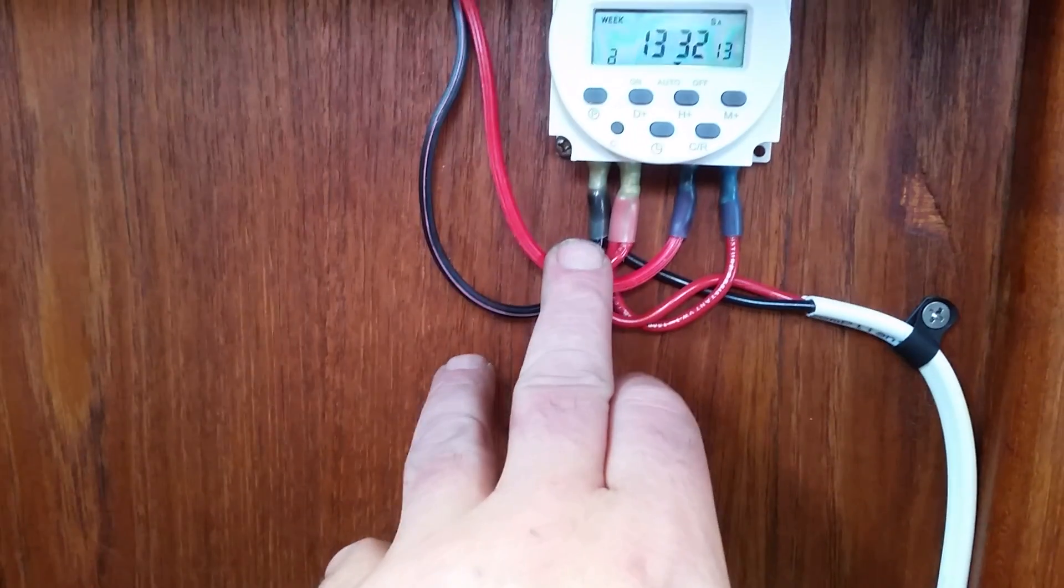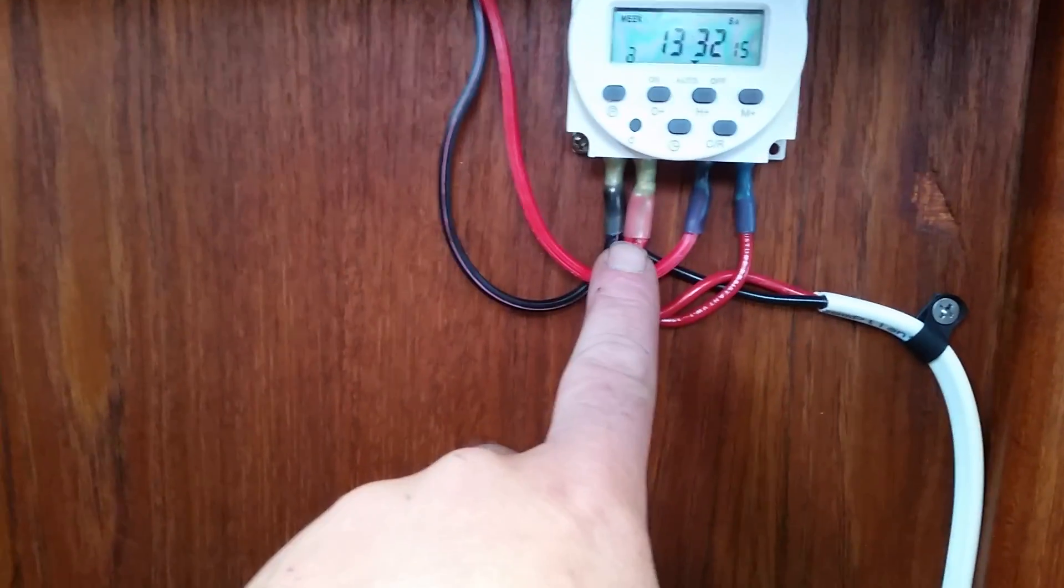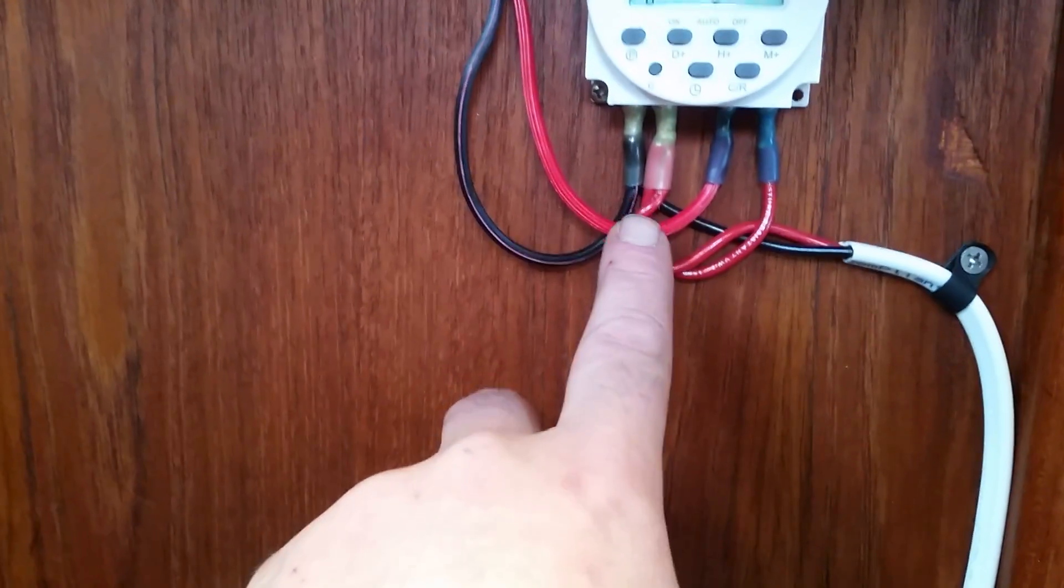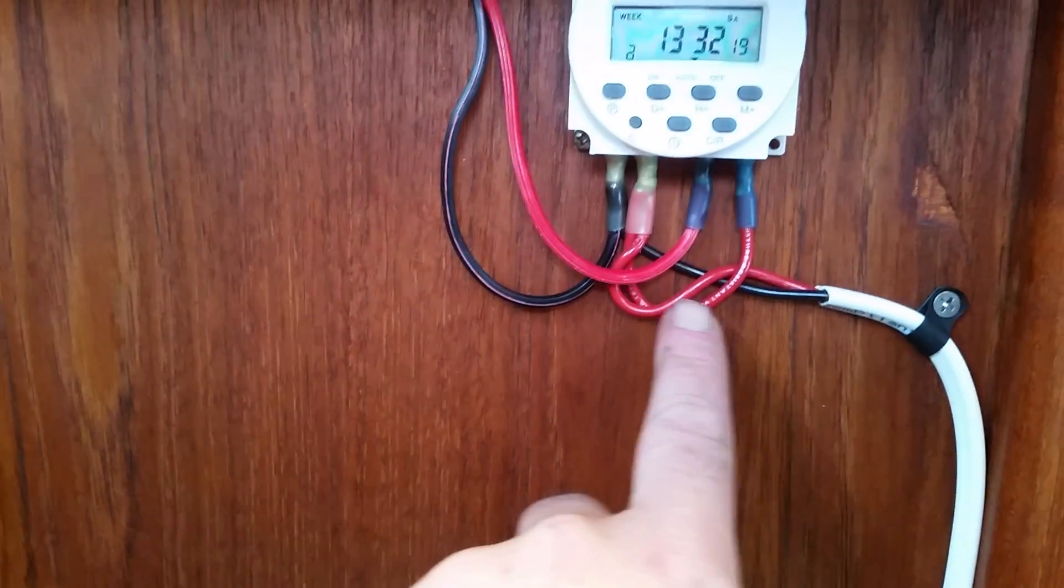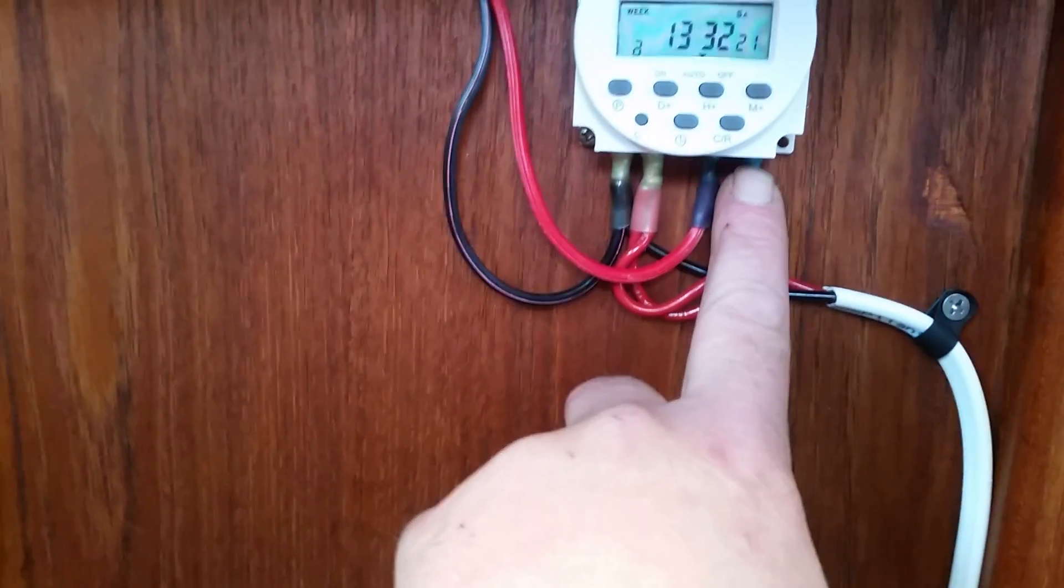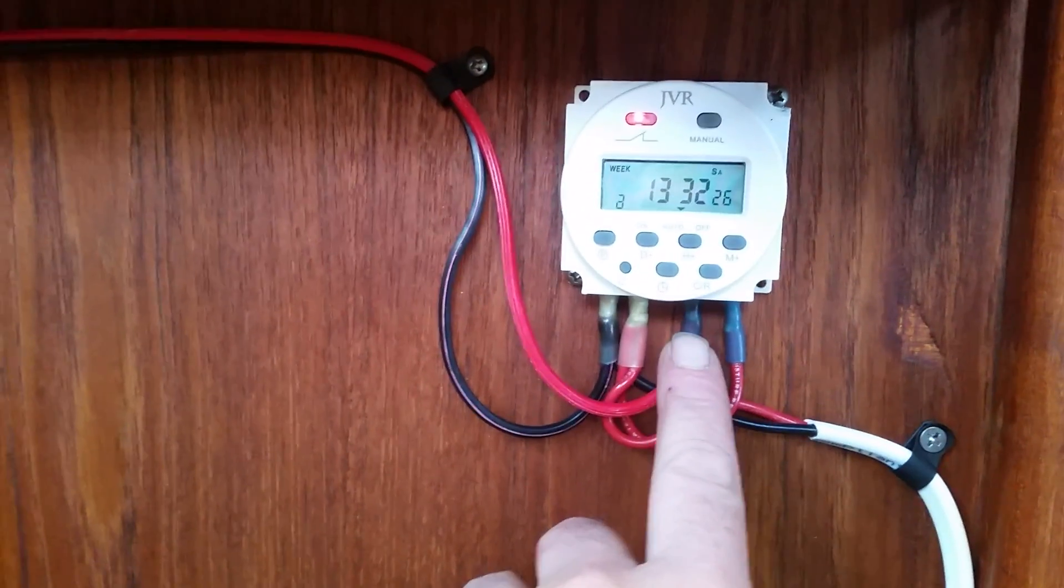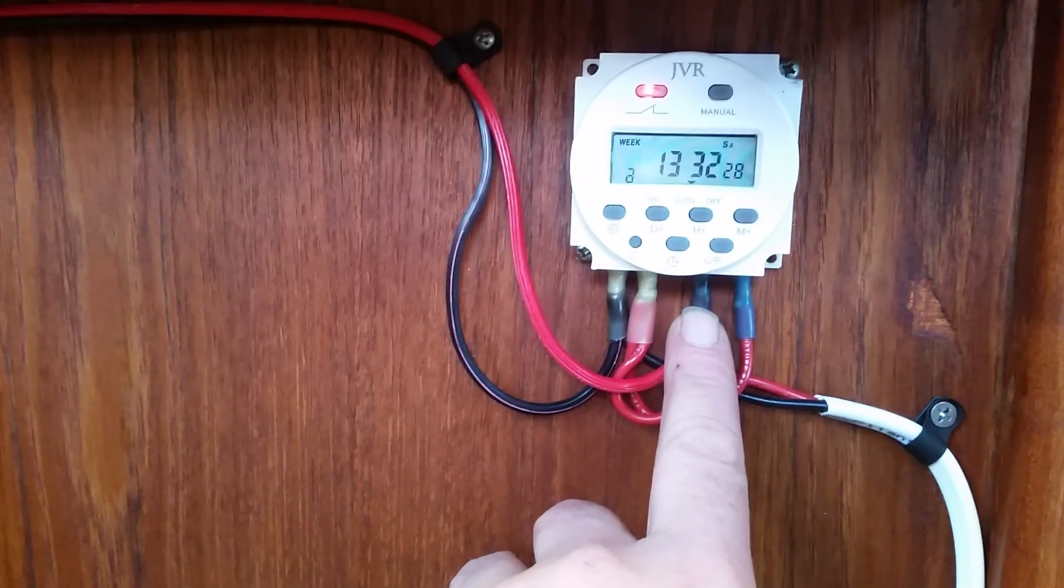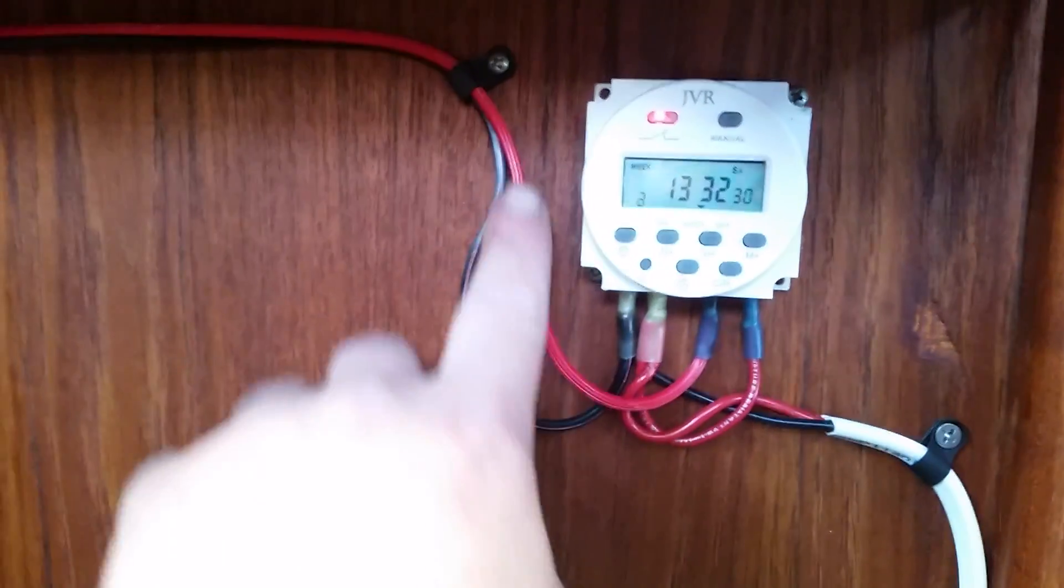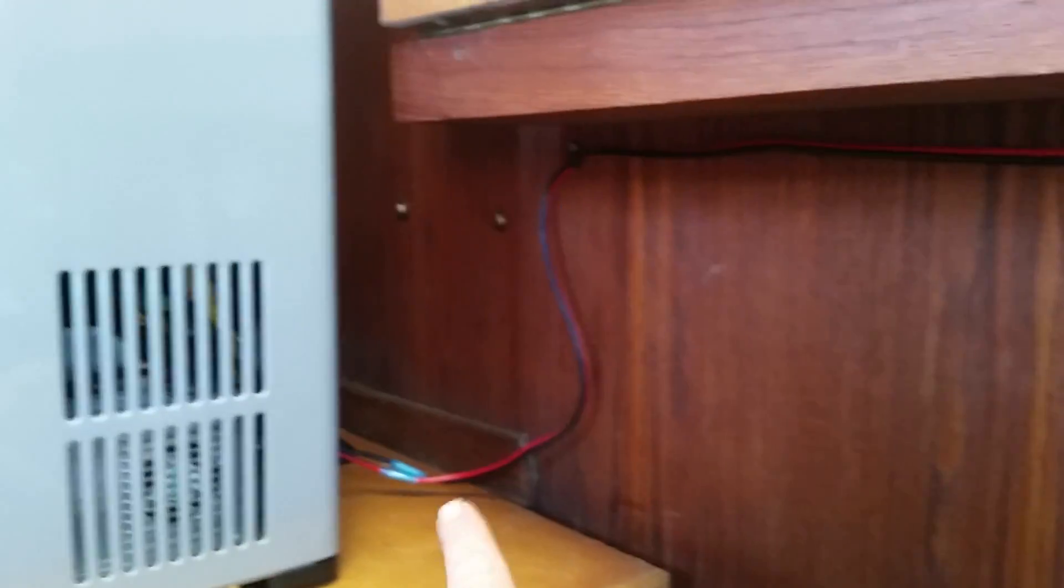Then you have a jumper that comes from the feed from the battery over to the switch, to one side of the switch. Then you have the positive out that goes to the freezer, over to the plug, and the negative out to the freezer over to the plug.